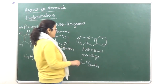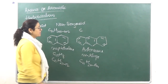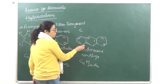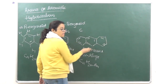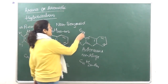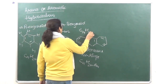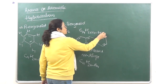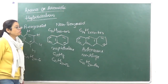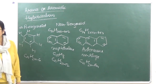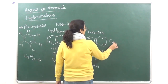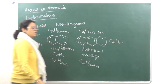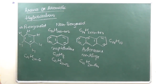Similarly, for anthracene, we count the carbon atoms: 1 through 14 — so 14 carbon atoms. The formula is H = 2×14 − 6×3 = 28 − 18 = 10. So the formula for anthracene is C14H10. This is how you calculate the formula depending on how many rings are present. The general formula is CnH(2n-6N), where N is the number of benzene rings.